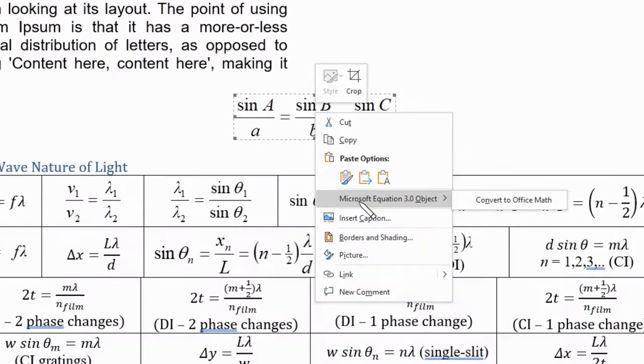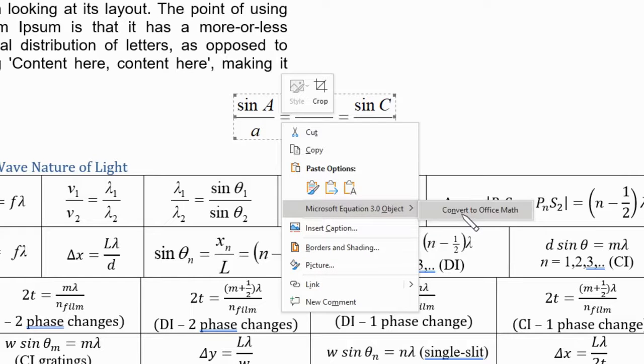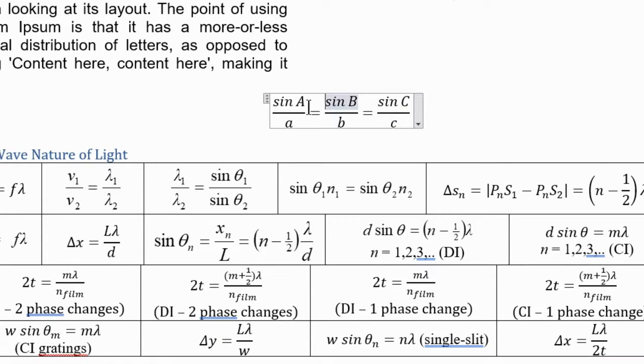And what you can actually do is you can convert them. So if you see here, I right-clicked on it. It says Microsoft equation 3.0 object. There's equation 2.0, 3.0, 3.1, 4.2. Who cares? And then it says to convert to Office Math. So I can do that. I can right-click on each one of these and say convert to Office Math. And it did. It converted it to a fully functional, but it didn't do it to the other ones.